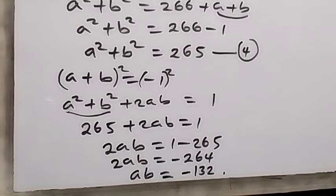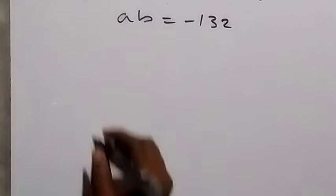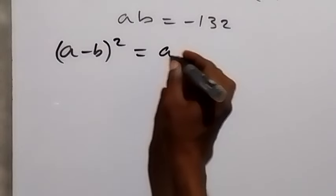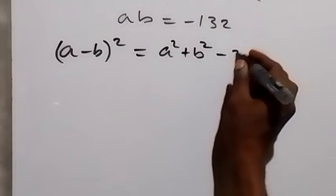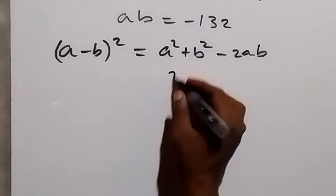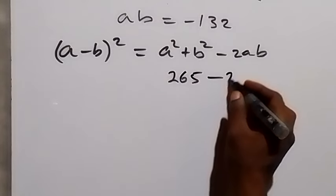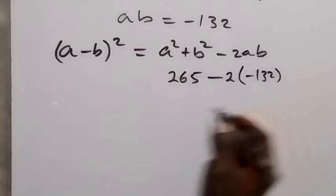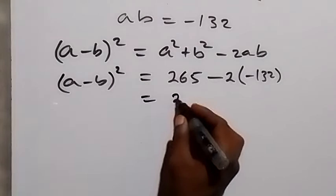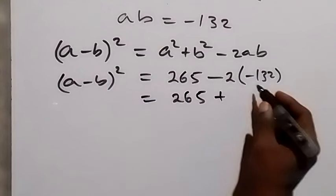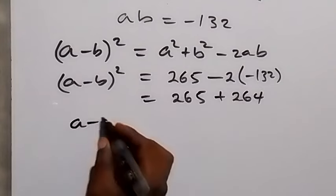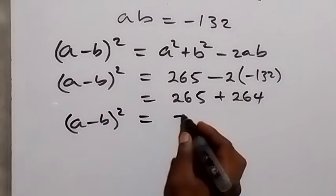Now let's find a minus b. Using the identity (a minus b) squared equals a squared plus b squared minus 2ab: we already know a squared plus b squared is 265, and ab is minus 132. So (a minus b) squared equals 265 minus 2 times (minus 132), which is 265 plus 264, giving us 529.